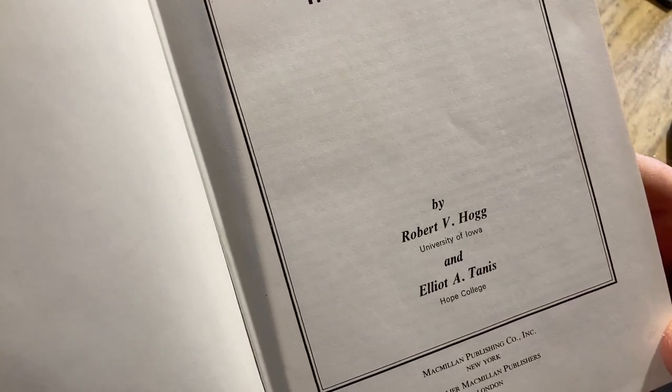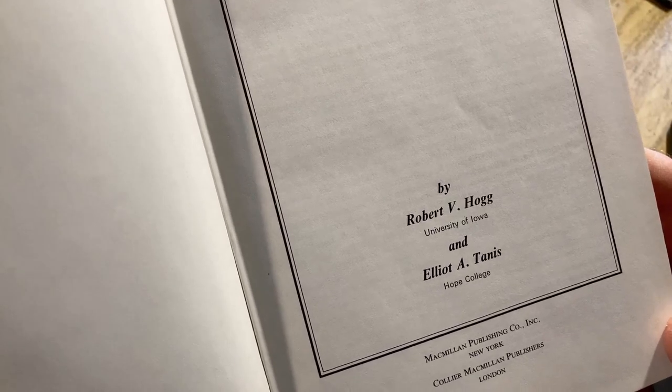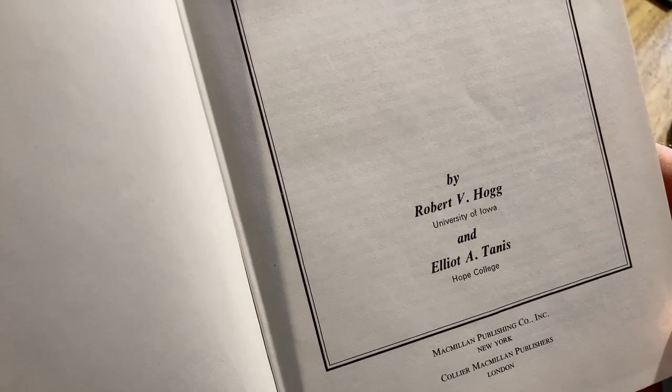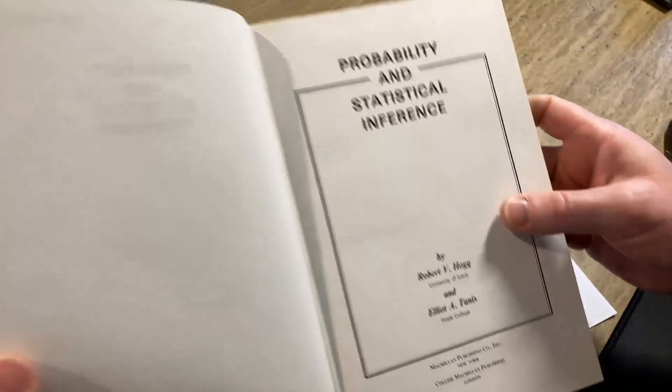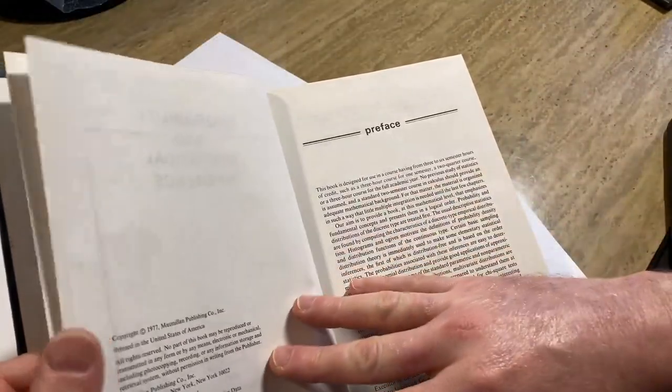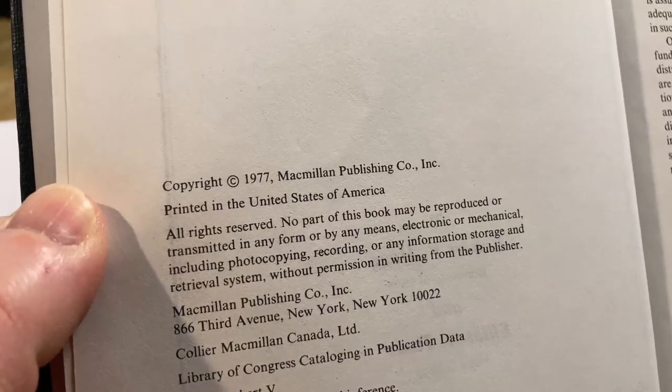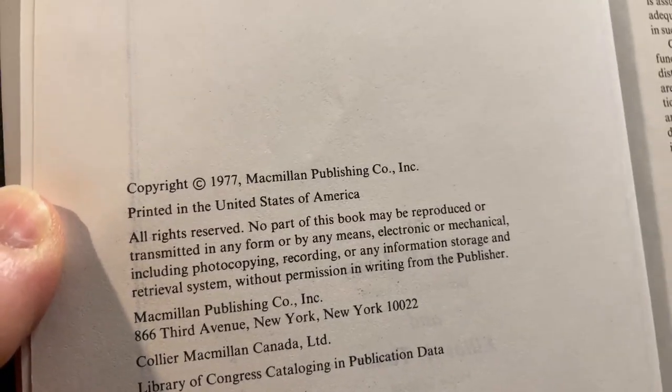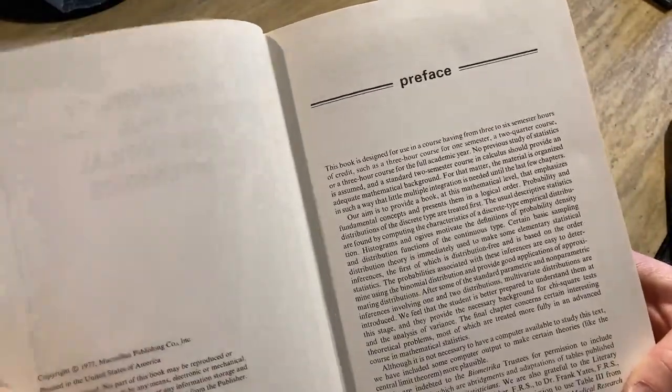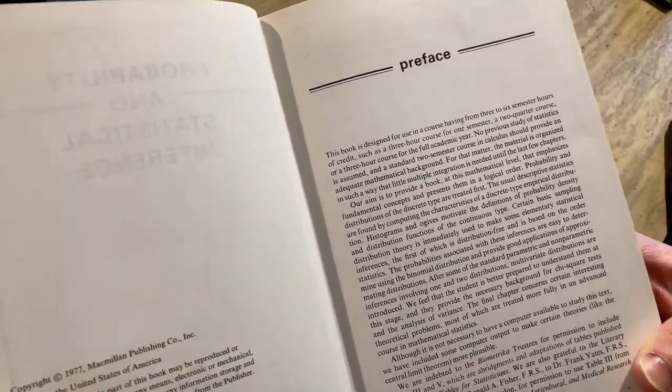Written by Robert V. Hogg, University of Iowa, and Elliot A. Tannis, Hope College. And then here's the copyright. 1977, printed in the United States of America. So it's been a while. It's been a while since this book came out. I don't know if there's a newer edition.